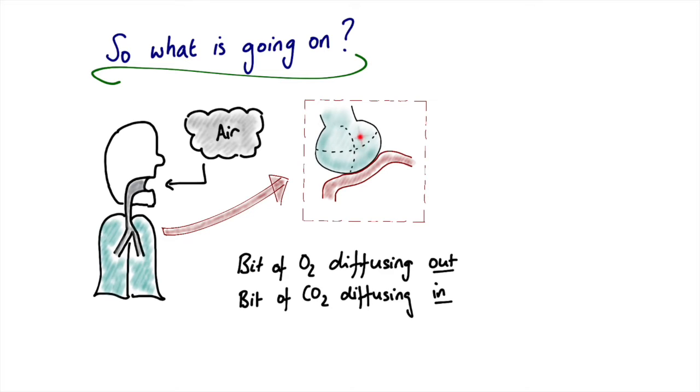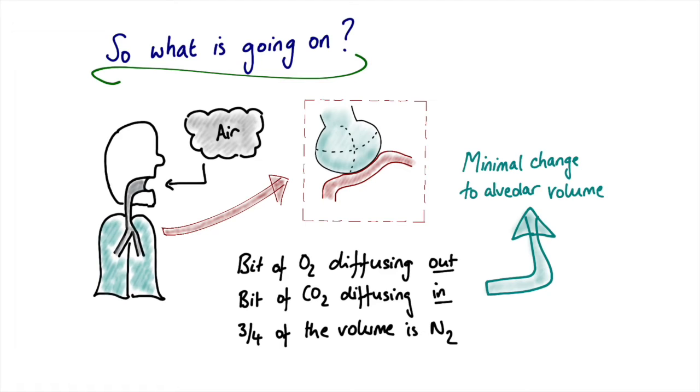The bulk of the volume of the alveoli will be made up of nitrogen, which is about three quarters of the volume. The consequence of that is that during the respiratory cycle, you don't see a significant change in alveolar volume when a patient is breathing air.